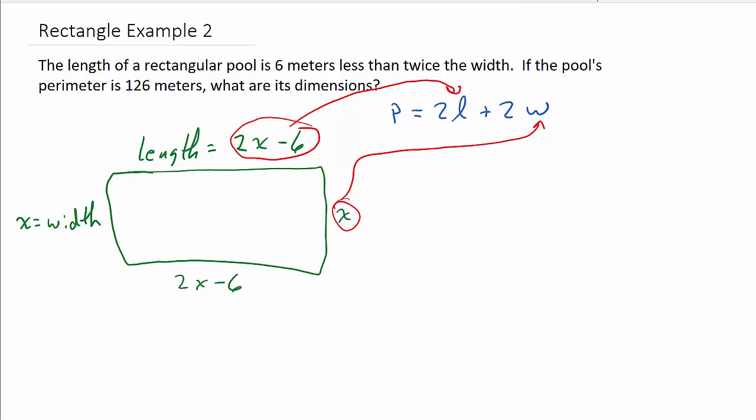Alright, so now let's work our problem. So if we plug this in for l and this in for w, we get the perimeter is 2 times 2x minus 6 plus 2 times the width, which is x. Alright, and what does it tell us about the perimeter? It tells us the perimeter is 126 meters. So we can replace the p, which is the perimeter, with 126. And now all we have is this equation to solve. Let me erase this and get it out of the way. So we just solve this equation for x.